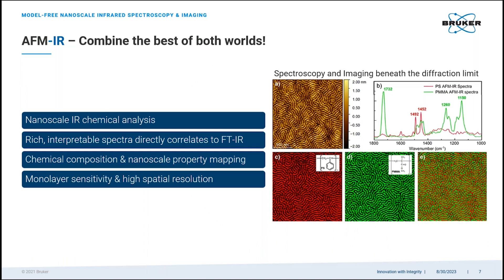AFM-IR advantageously combines the nanoscale spatial resolution provided by the AFM together with the chemical identification offered by infrared spectroscopy. It offers a wealth of correlative information for composition and morphology mapping — for example, to study phase separation behaviors of polymers, where you're able to clarify the chemical ID associated with a certain phase of the sample.